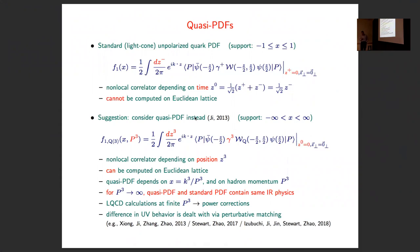This is what people call the same in correct physics or non-determinative physics. This momentum P3 appears explicitly in results for these objects, which is different from the light-cone case where there's no explicit dependence on P+. So lattice calculations can only be done at finite P3, therefore there are power corrections.